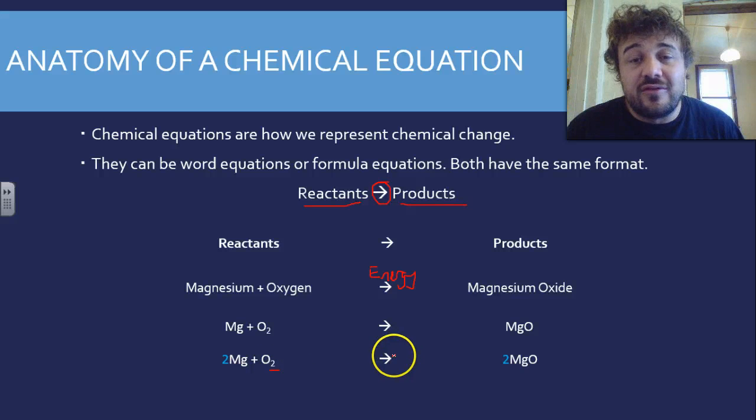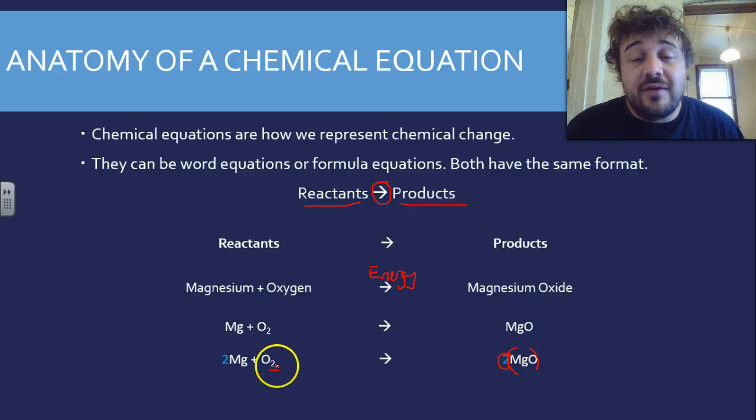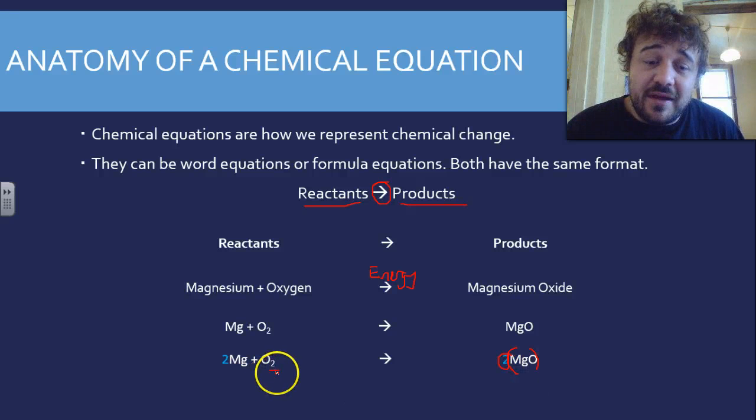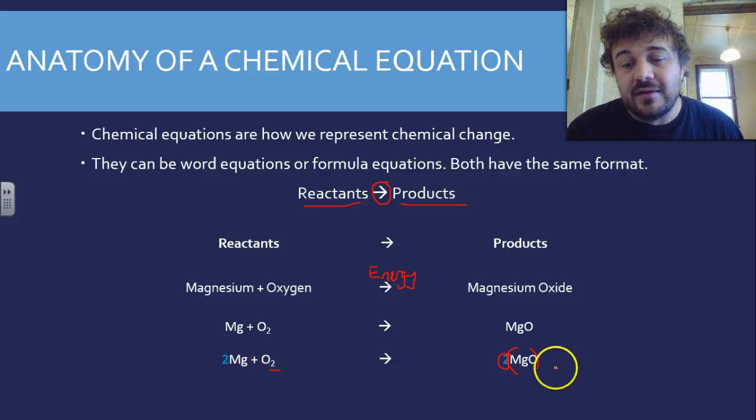Two oxygens because you've got this number out the front. That's called a coefficient, and that means you multiply everything that it's attached to. If it's the subscript, like this one here, that means it's only multiplying that element or atom.